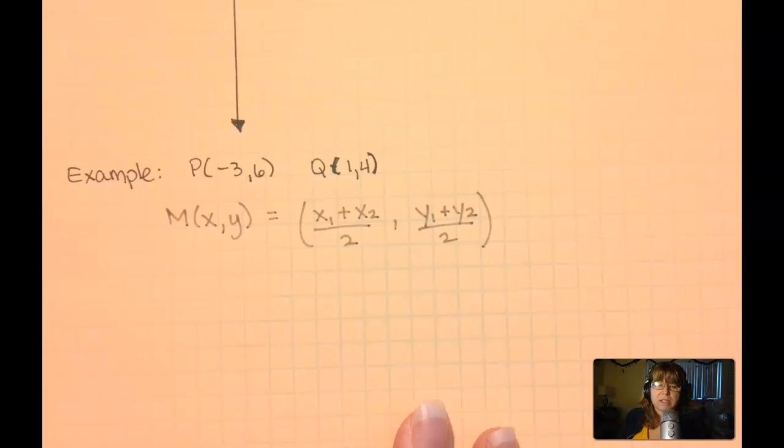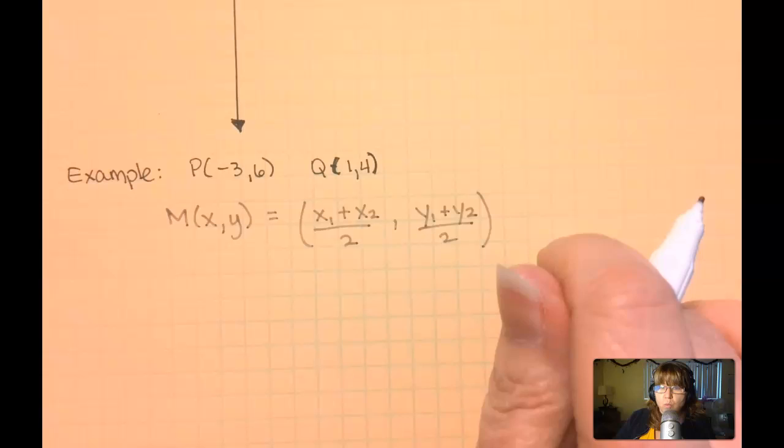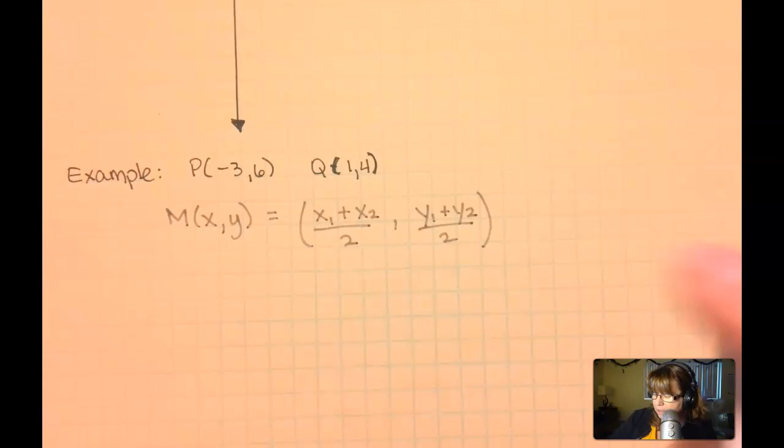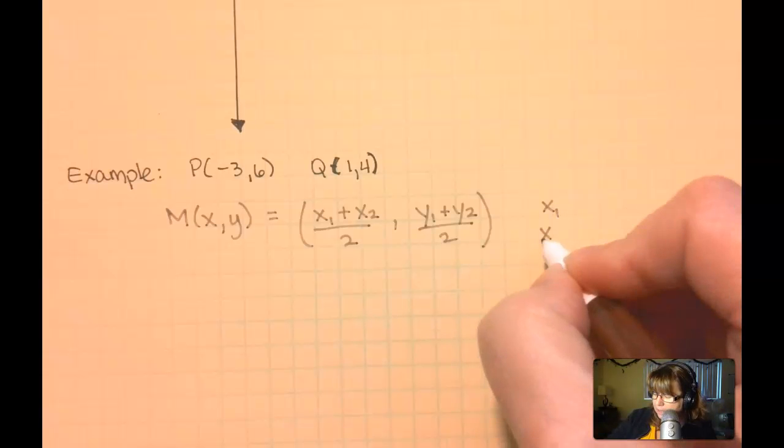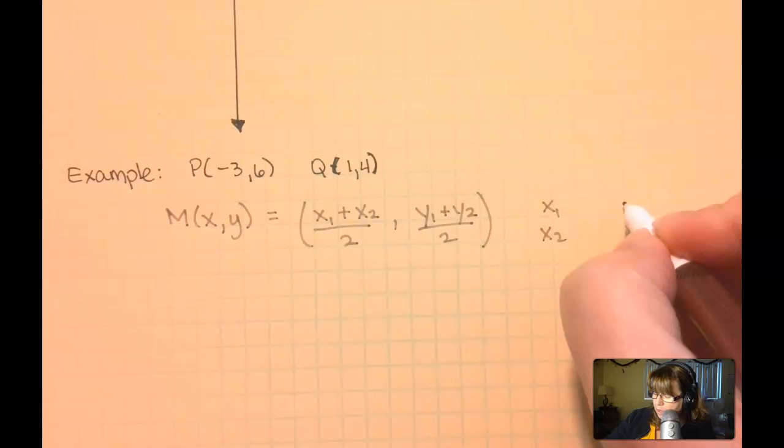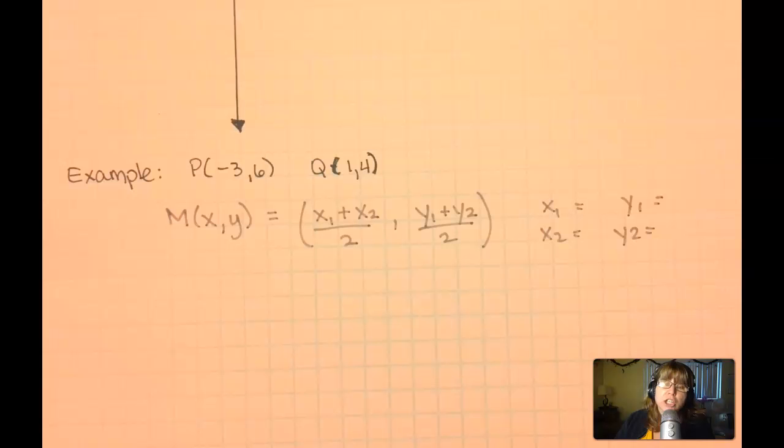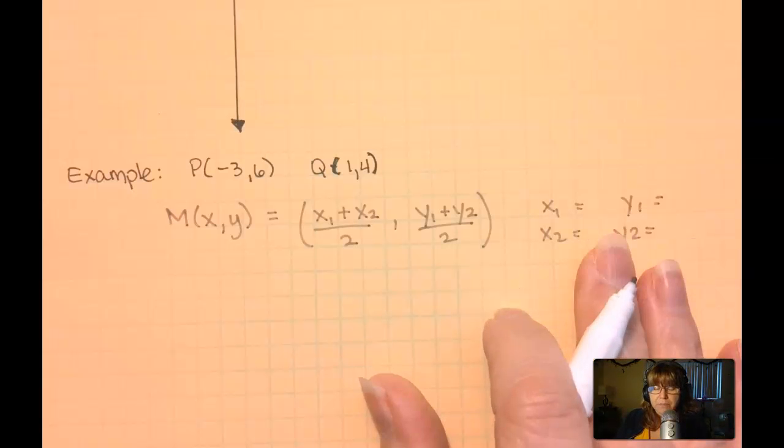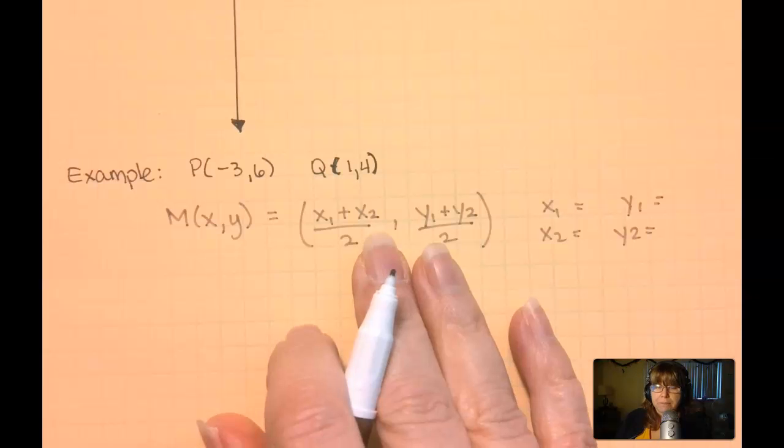I do need to know what my x1, x2, y1, y2 is. So I am going to go ahead and write that out off to the side here, x1, x2, y1, y2. I just find it easier if I have all the information laid out very clearly to plug it into the formula.